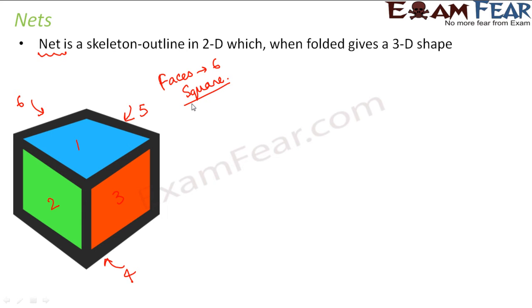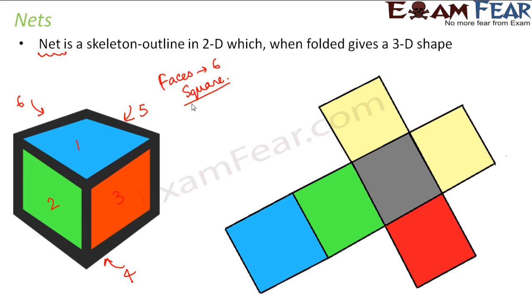So you basically need six squares. That is our requirement. That means our skeleton outline would consist of six squares. Now here I have colored each square differently so that we can relate it to this cube. So if this is one, this also represents one. This represents two. This represents three. And this is our fourth surface at the bottom which will form the base.